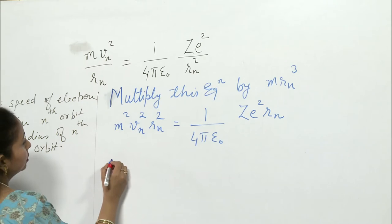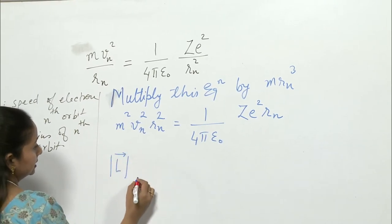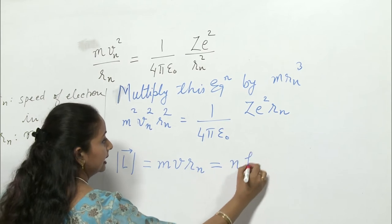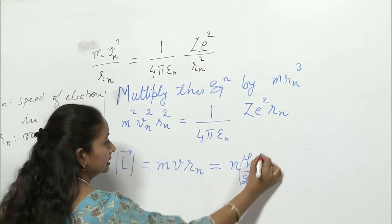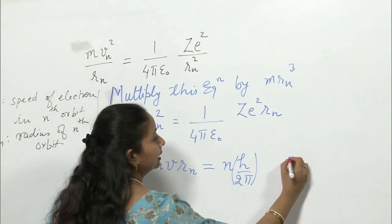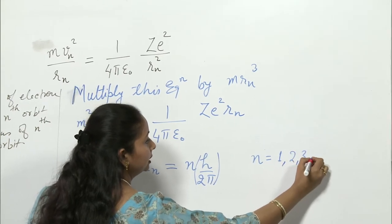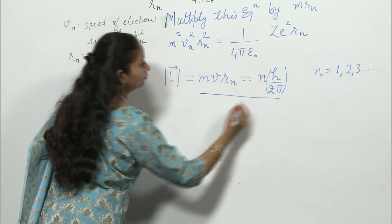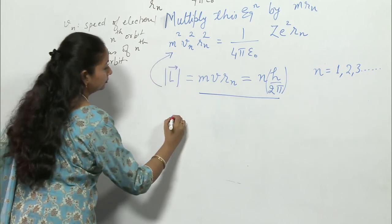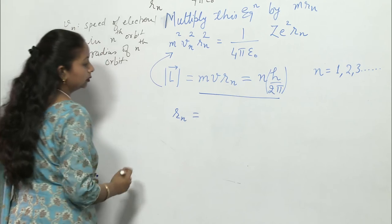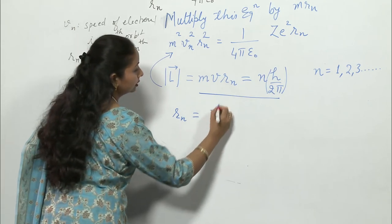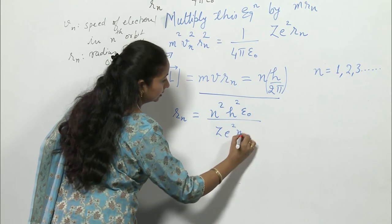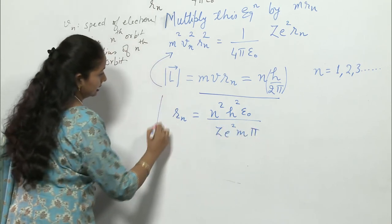Now, since we know that the magnitude of orbital angular momentum, which is equal to mvrn, is nh / 2π — that is, an integral multiple of h / 2π — where n has values 1, 2, 3 and so on. When we substitute this value in the above equation, we obtain rn, the radius of the n-th orbit, equal to n²h²ε₀ / (ze²mπ).